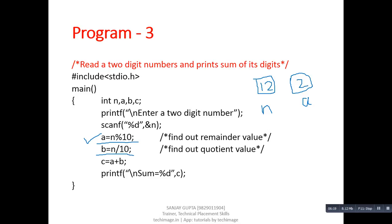Next, B equals N divided by 10 — N is 12 divided by 10, which gives the quotient value of 1, stored inside B. So A becomes 2 and B becomes 1. Now if we add both values, A plus B, the value of C becomes 3, which is the sum of the digits of 12. Through this C variable we can print the result to the user.